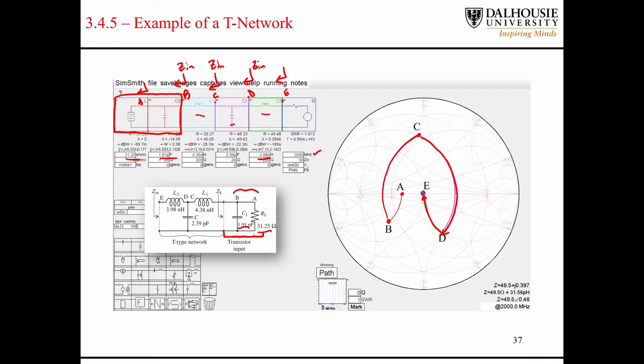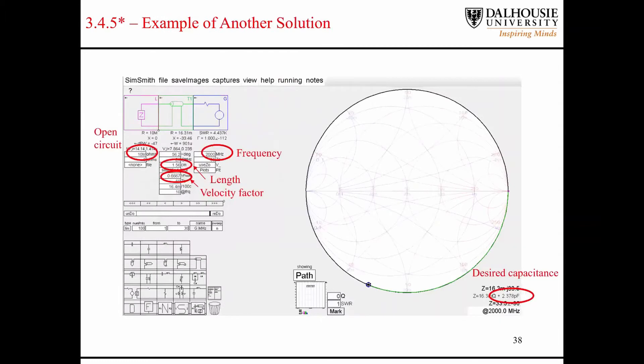One thing that we talked about was making transmission lines look like capacitors. One thing I wanted to try was, can we replace this capacitor with a transmission line, with an open circuit transmission line of a certain length? Can we make it have a capacitance of 2.39 picofarads at 2 gigahertz, and replace this capacitor with a piece of copper?